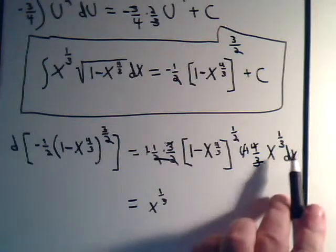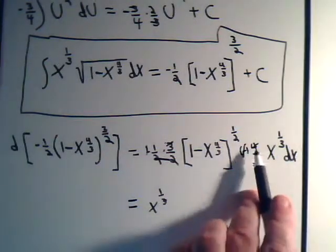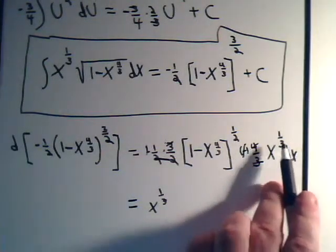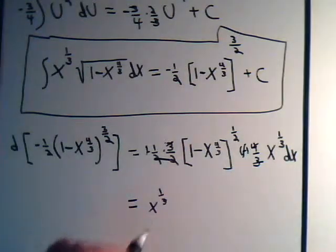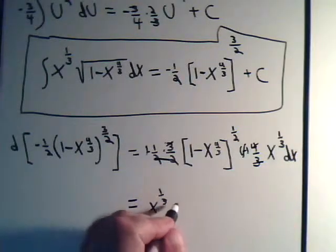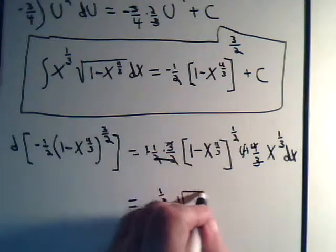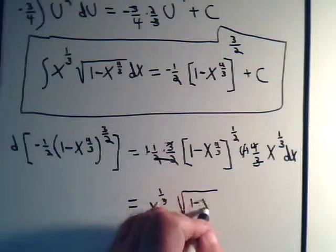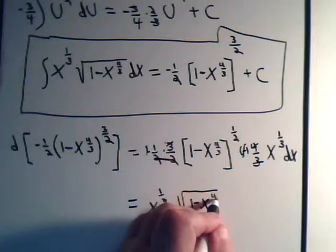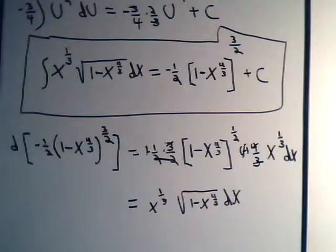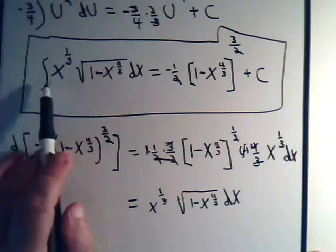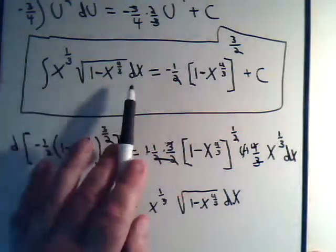This came and we differentiated this. And that would be 4/3 with a minus sign times x to the 1/3 dx. We left that out initially. And here we have an x to the 1/3 times the square root, 1 minus x to the 4/3 dx. And that's what we have inside the integral here.